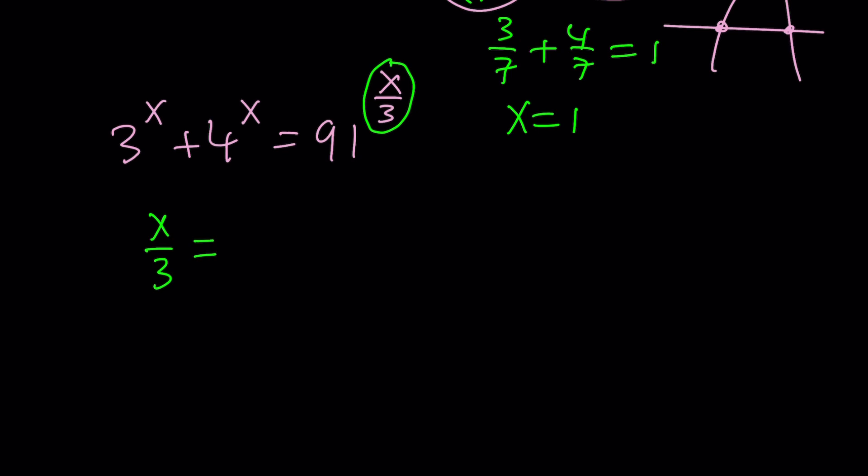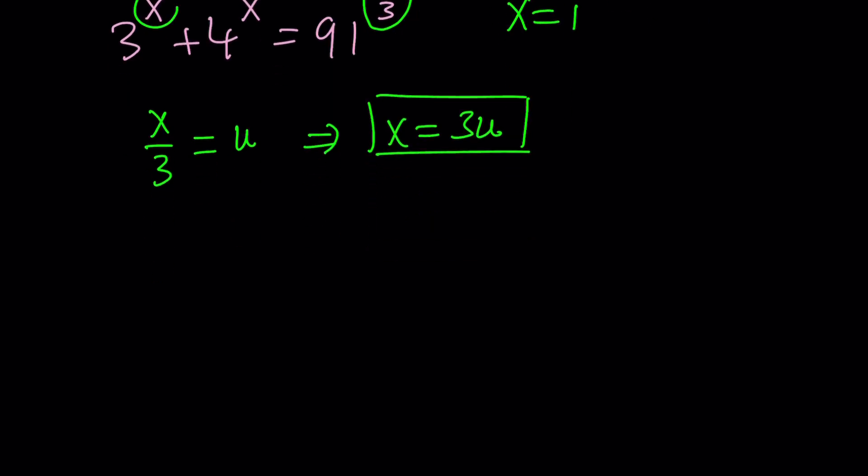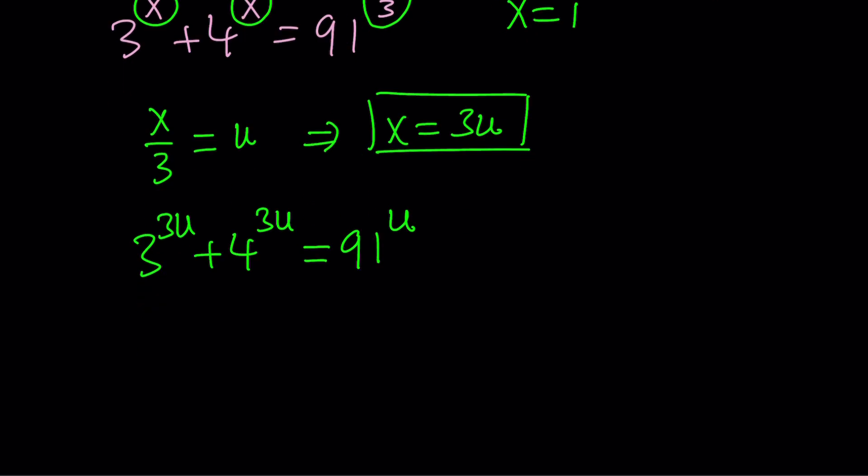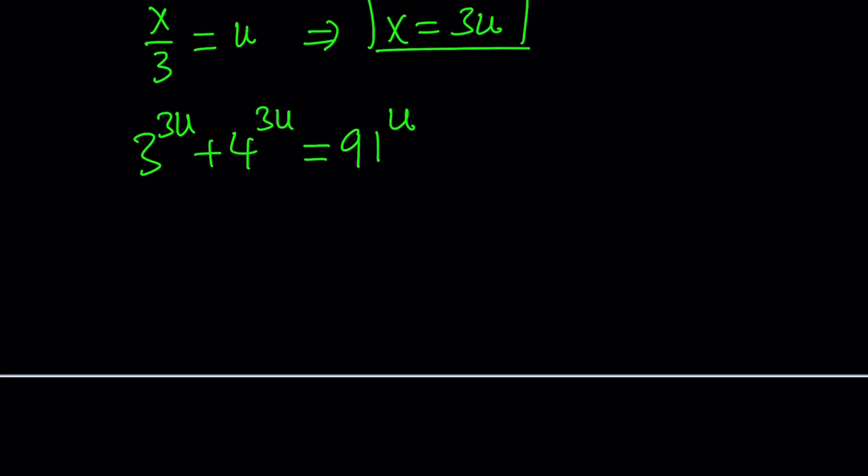So, to change that to a non-fraction, I'm going to set x over 3 equal to something. How about u? Good. Now, this tells us that x equals 3u. So, now you can replace x with 3u. So, you'll get 3 to the power 3u plus 4 to the power 3u equals 91 to the power u because x over 3 is u. Now, notice that we don't have any fractions anymore. Or, moreover, we have some nice exponentials that we can simplify.